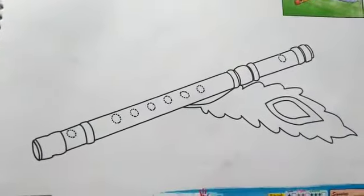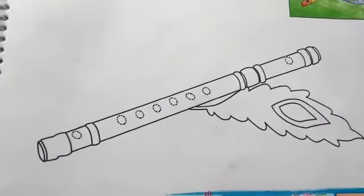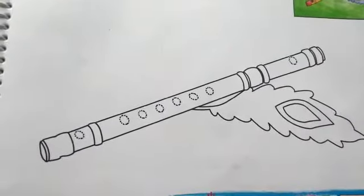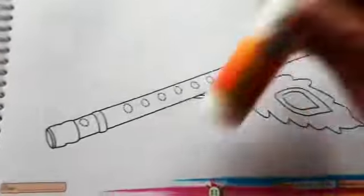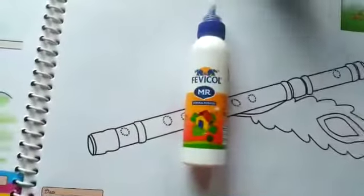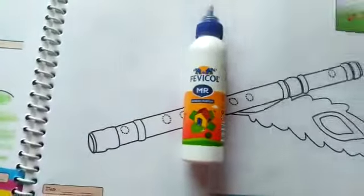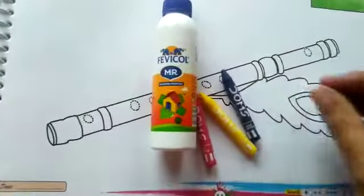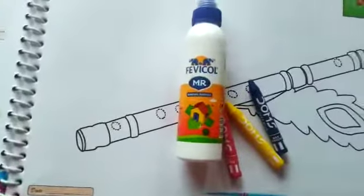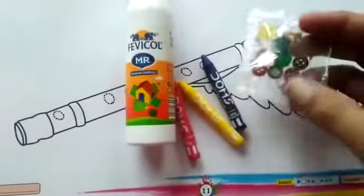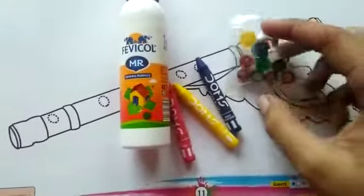First of all, to make this activity, we need gum, some crayons — red, yellow and purple — and some beautiful buttons.